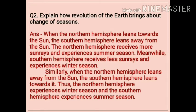Question number 2. Explain how revolution of the earth brings about change of seasons. Answer: When the northern hemisphere leans towards the sun, the southern hemisphere leans away from the sun. The northern hemisphere receives more sun rays and experiences summer season, while the southern hemisphere receives less sun rays and experiences winter season.